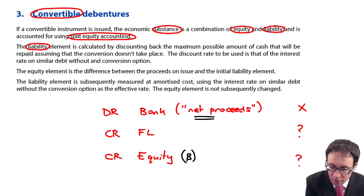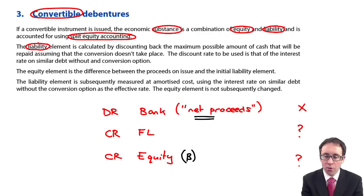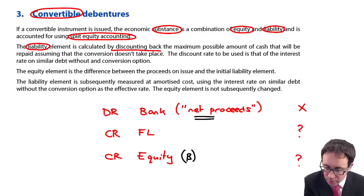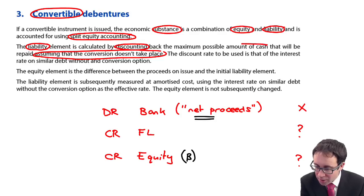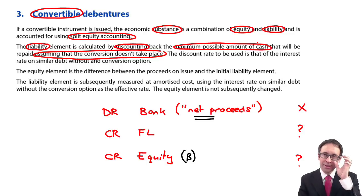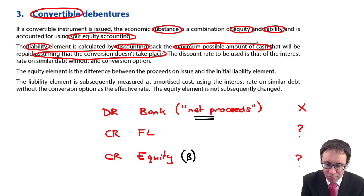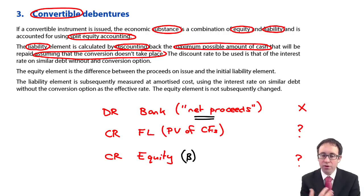What we do with the liability is treat it as if it is a 100% debt instrument, assuming there is no conversion option. We then do some discounting of the maximum possible amount of cash that would be repaid if it were just a 100% debt instrument. So the value of the financial liability is the present value of the future cash flows.